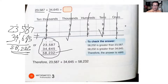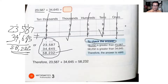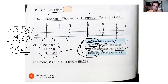How do you check the answer? Fifty-eight thousand two hundred thirty-two is greater than twenty-three thousand five hundred and eighty-seven, so this is your answer. Your answer is always greater than the addends. These are the two addends, and the sum is always greater or bigger than the two addends.